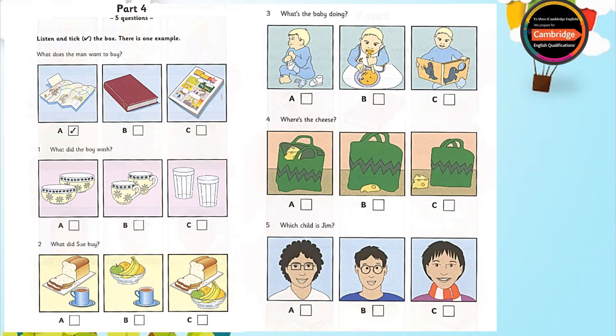2. What did Sue buy? We didn't have any bread for breakfast this morning. I went to the market and bought some. Good. And we needed some coffee. Did you buy any? Sorry. No, I didn't. But I bought some fruit. Oh, right.